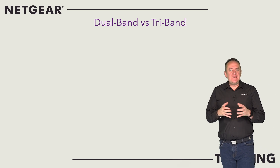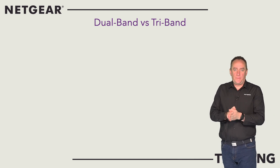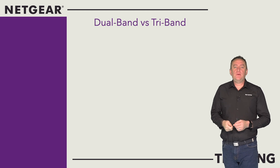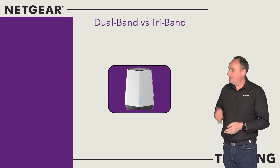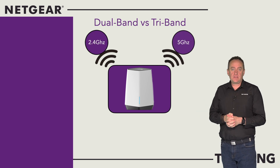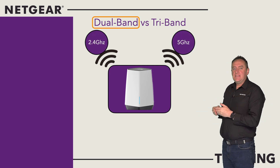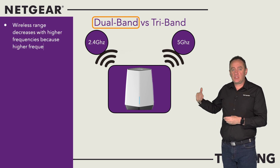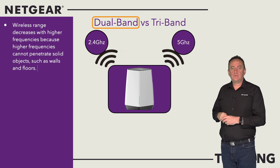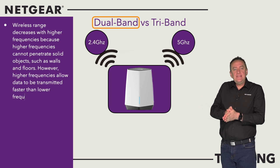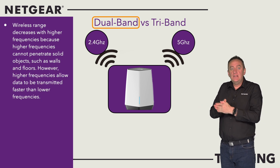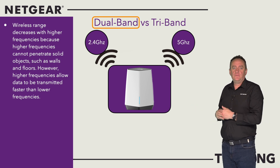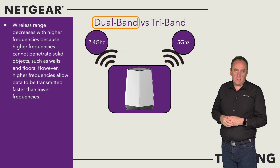Finally, let's dig a little deeper into the differences between dual band and tri-band. They both refer to the Wi-Fi frequency bands used to transmit data: 2.4GHz and 5GHz. Wireless range decreases with higher frequencies, because higher frequencies can't penetrate solid objects such as walls and floors. However, higher frequencies allow data to be transmitted faster than lower frequencies, so the higher 5GHz band will upload and download files faster than the 2.4GHz band.